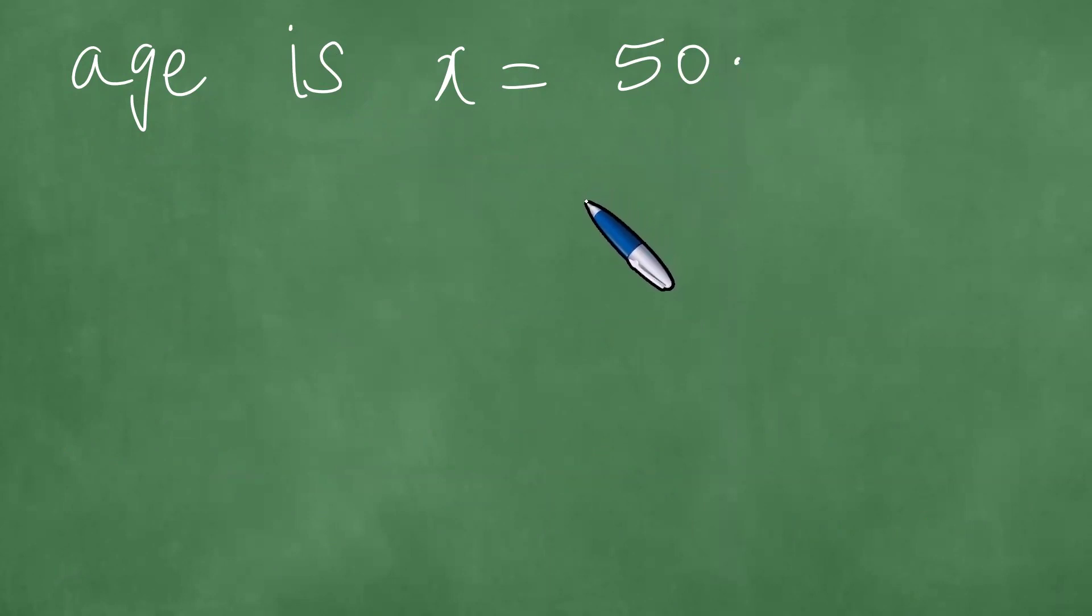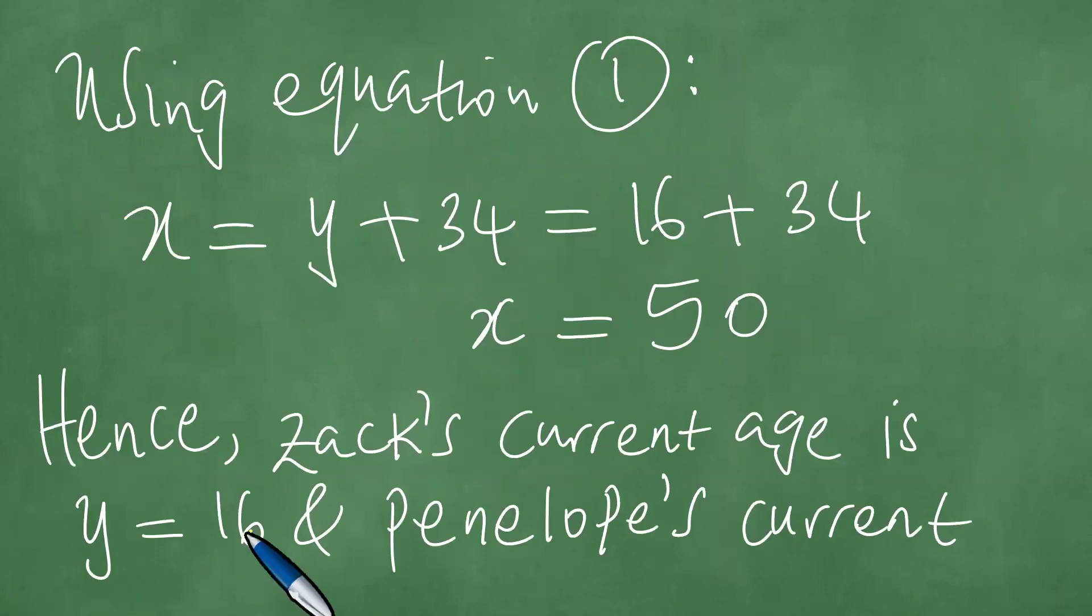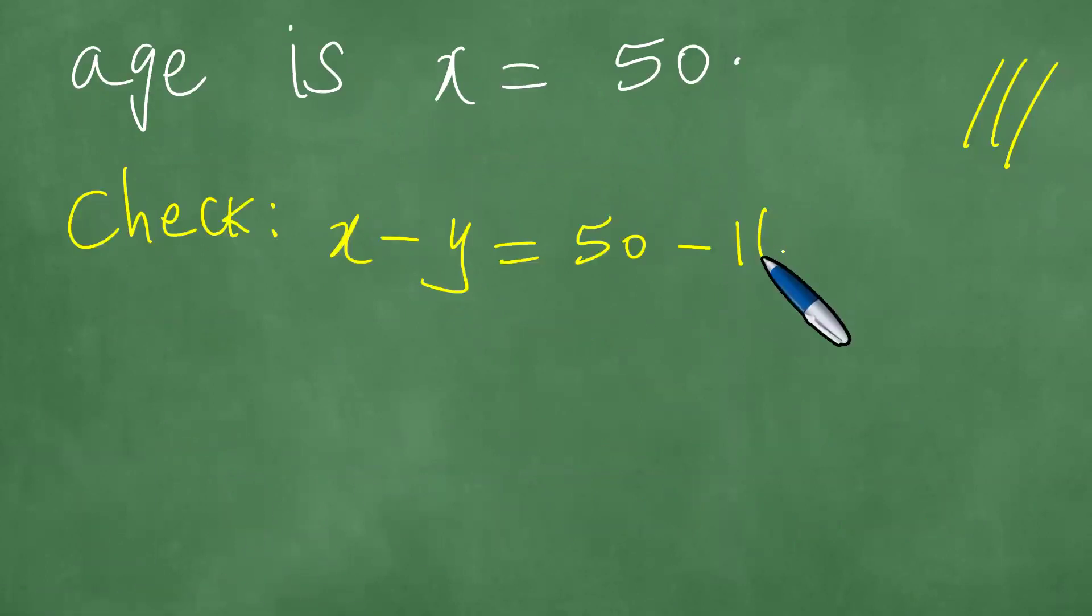And now we have solved this problem. Let's do a quick check. If you understand that this is the solution, but let's do a quick check. We're going to find the difference between the two ages. And we've seen that X is 50, and Y is 16, and the difference is 34.